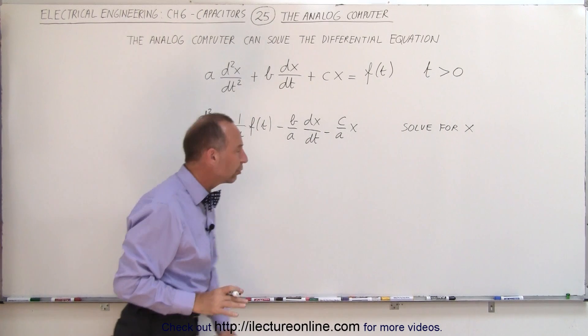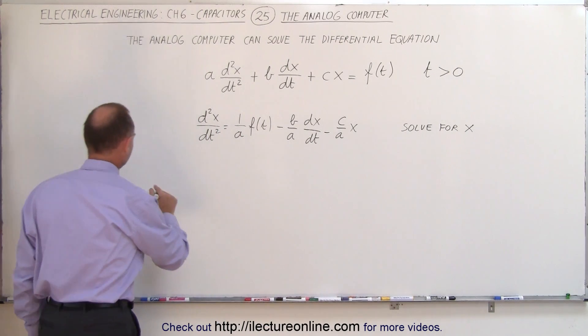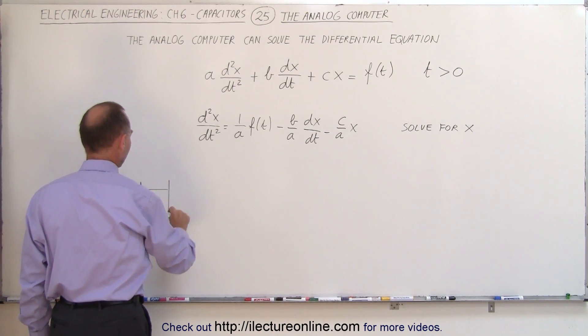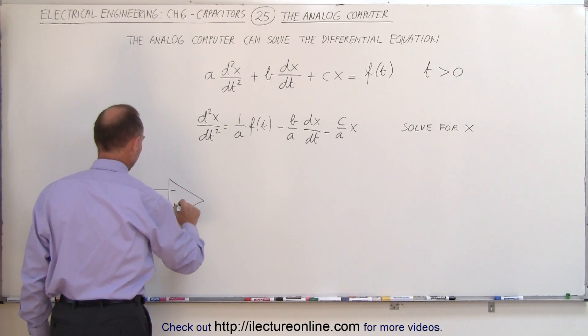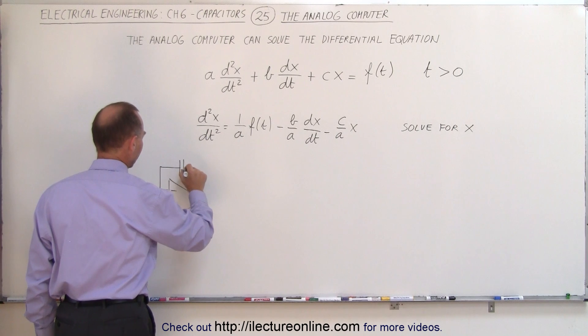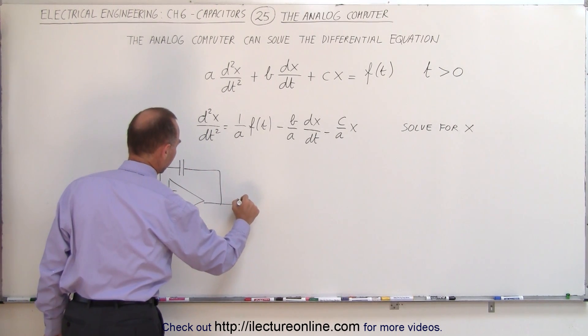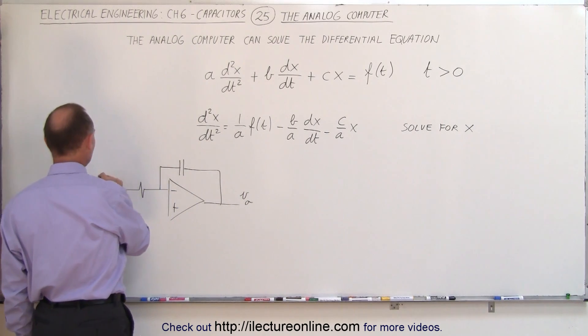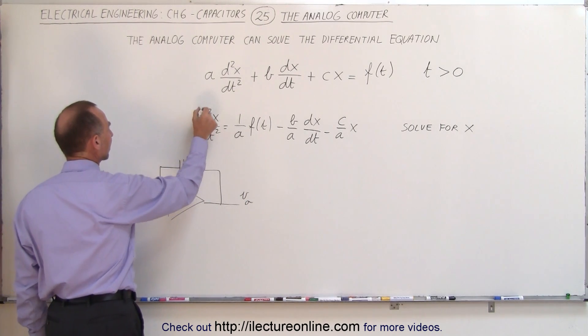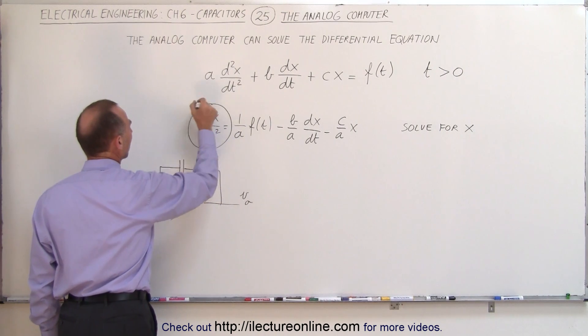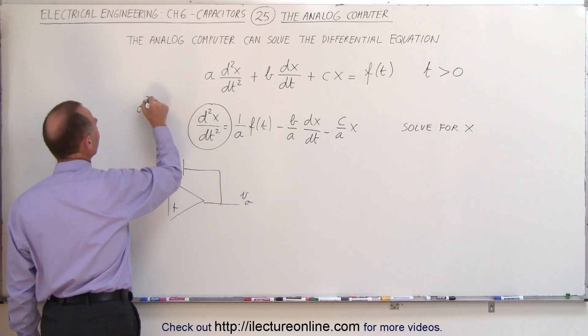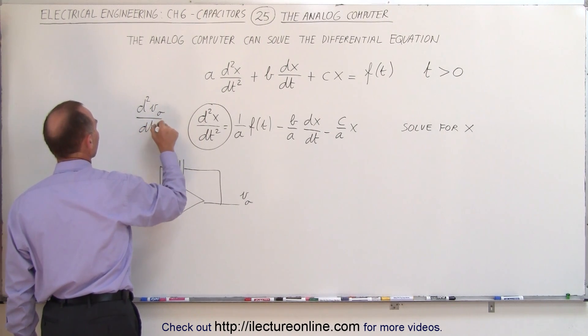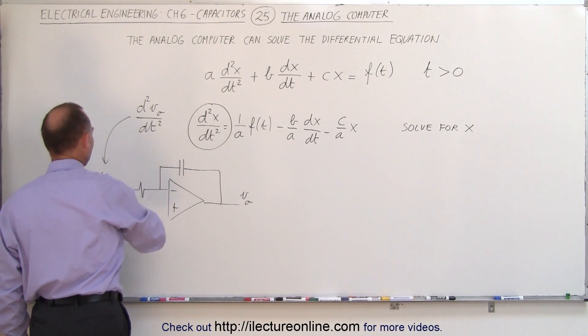What we could do is build an integrator circuit. The general concept of an integrator circuit looks like this. We're going to have a capacitor here. Here's the output, let's call this the output voltage. And this is the input voltage, v_in. Let's say that this quantity here represents the second derivative of the output voltage with respect to time. And that then goes in here. That will be your input.